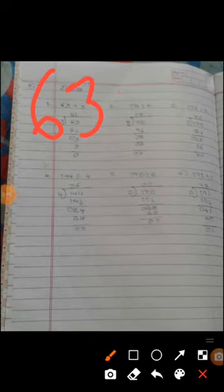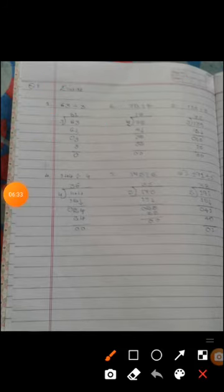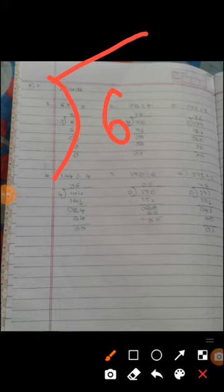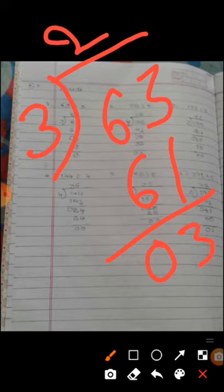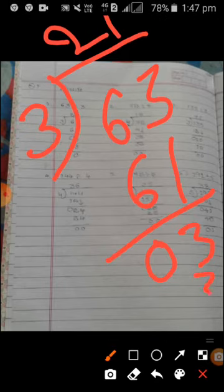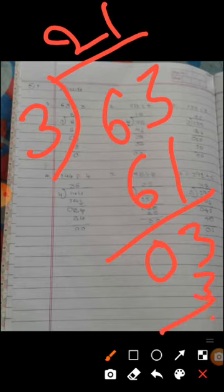First one, 63 can divisible by 3. 3 twos are 6. 6 minus 6, 0. 3 can be taken down. 3 ones are 3. 3 minus 3, 0. So the answer is 21.